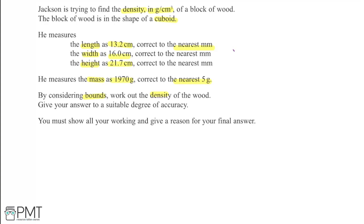Density equals mass divided by volume, and we're going to find an upper and lower bound for density. The upper bound for density occurs when the numerator — the mass — is at its highest, and the denominator — the volume — is at its lowest. The lower bound for density is the opposite: lower bound for mass divided by upper bound for volume.